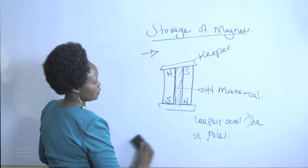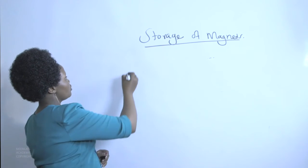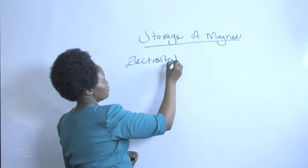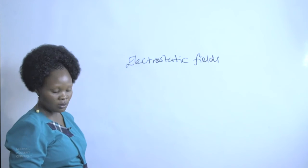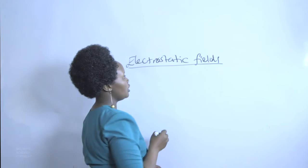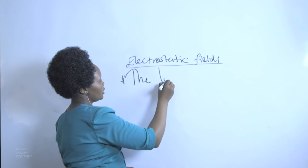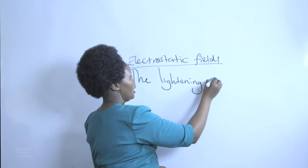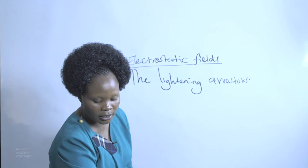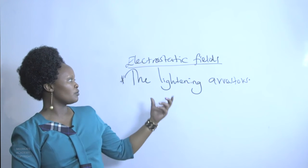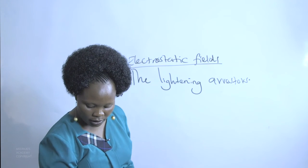How about the electrostatic field — how do we apply it? Electrostatic fields also have applications. In our case, we are going to mention lightning arresters. Lightning arresters are installed in our houses to prevent our houses from being struck by lightning.